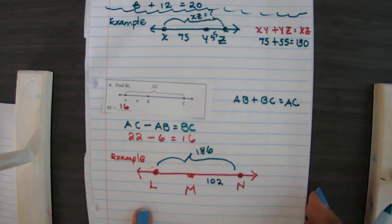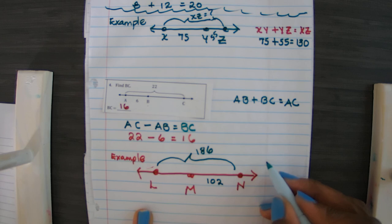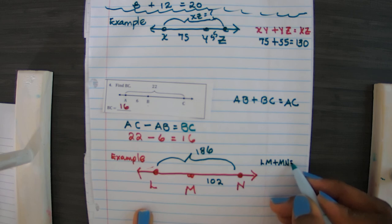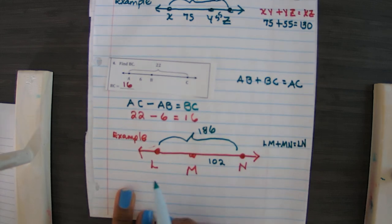The segment addition postulate says that if we have two parts, three collinear points, one is between the other, then we know that LM plus MN is going to be equal to the total length of LN. Since we know the total or the whole, what we're going to do is subtract.